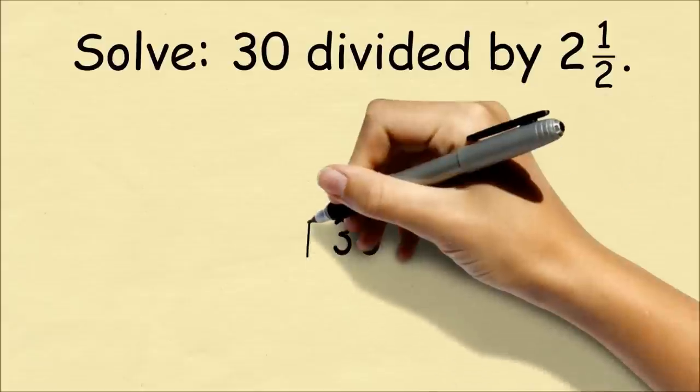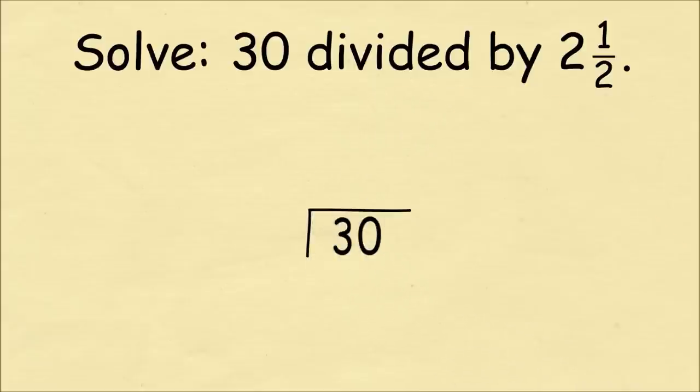In school, we would do this problem by long division. We would set up 30 as the dividend. The number 2 and a half, which is our divisor, becomes 2.5.